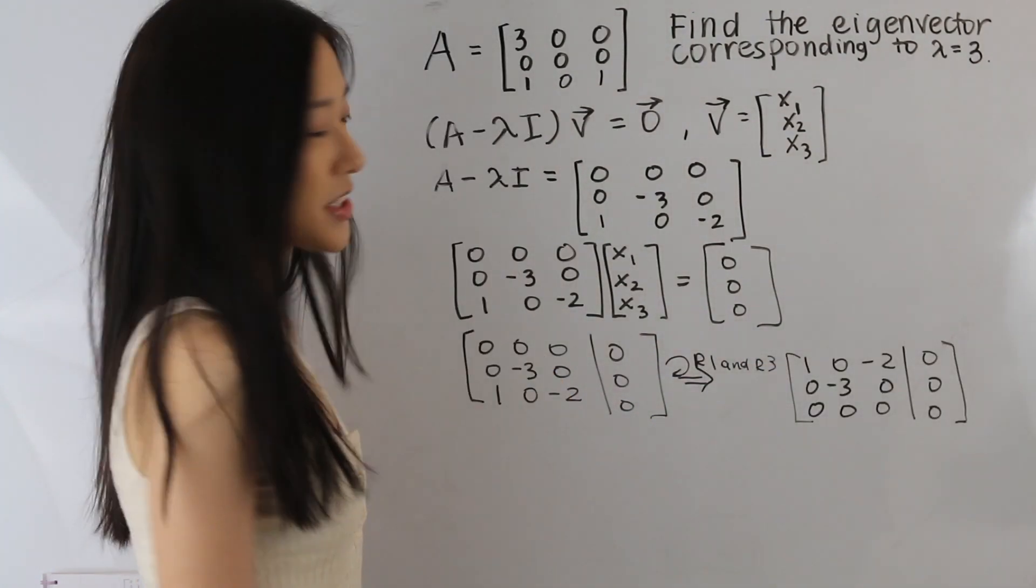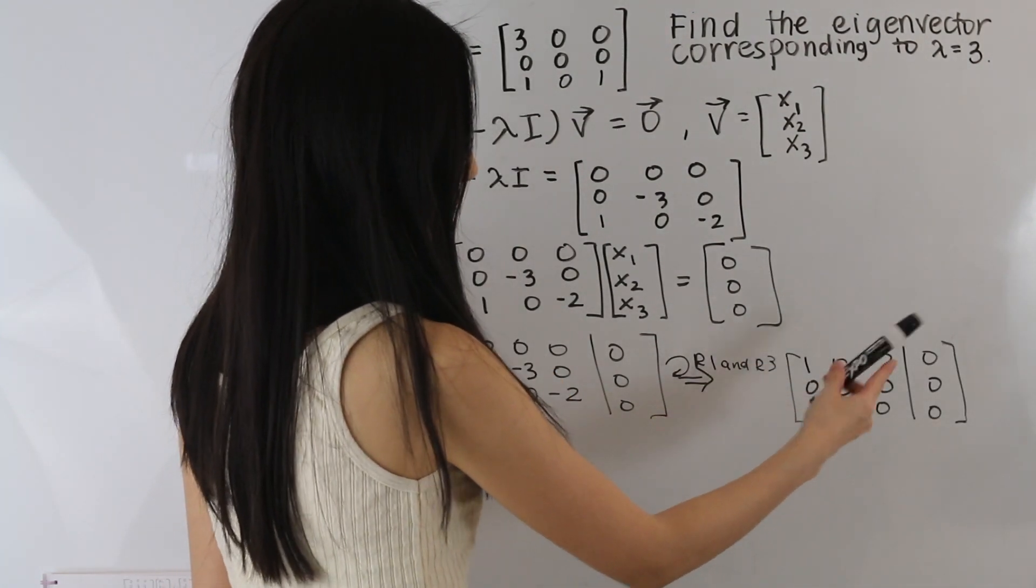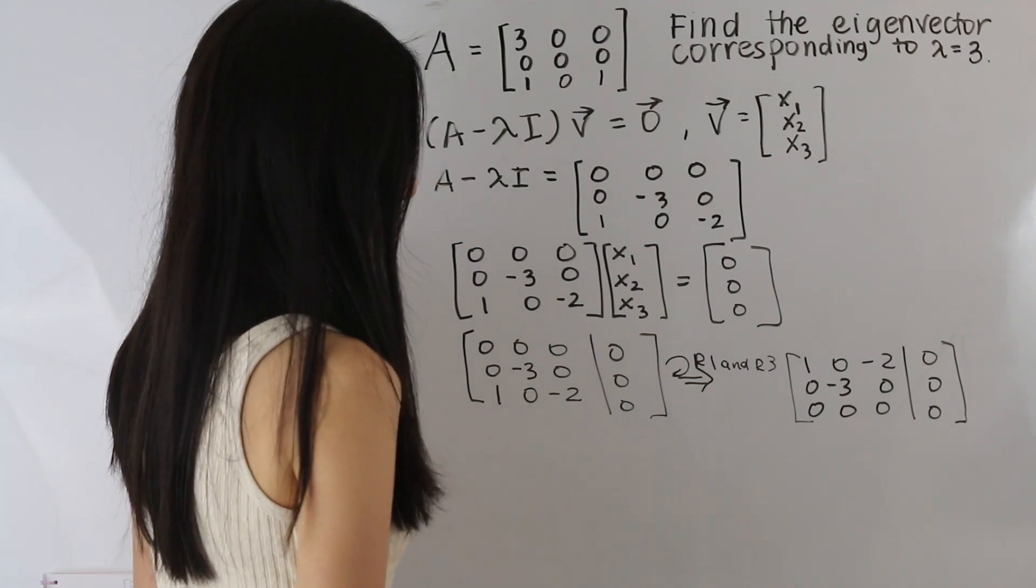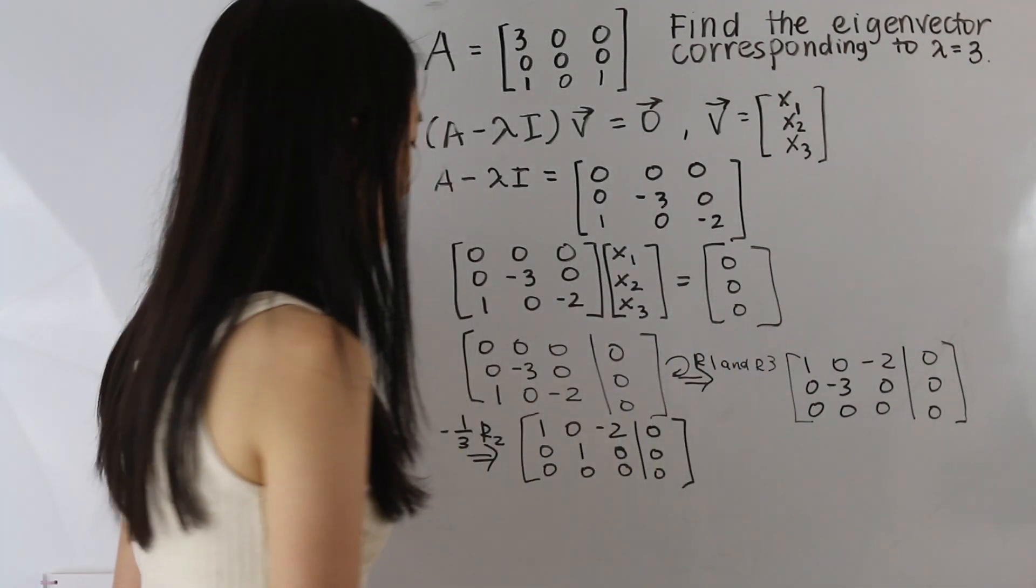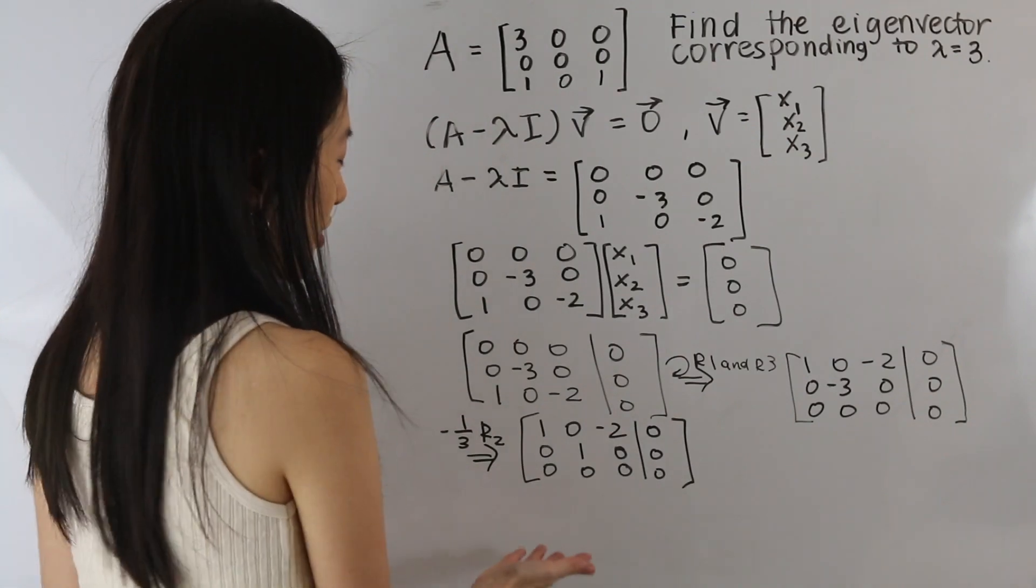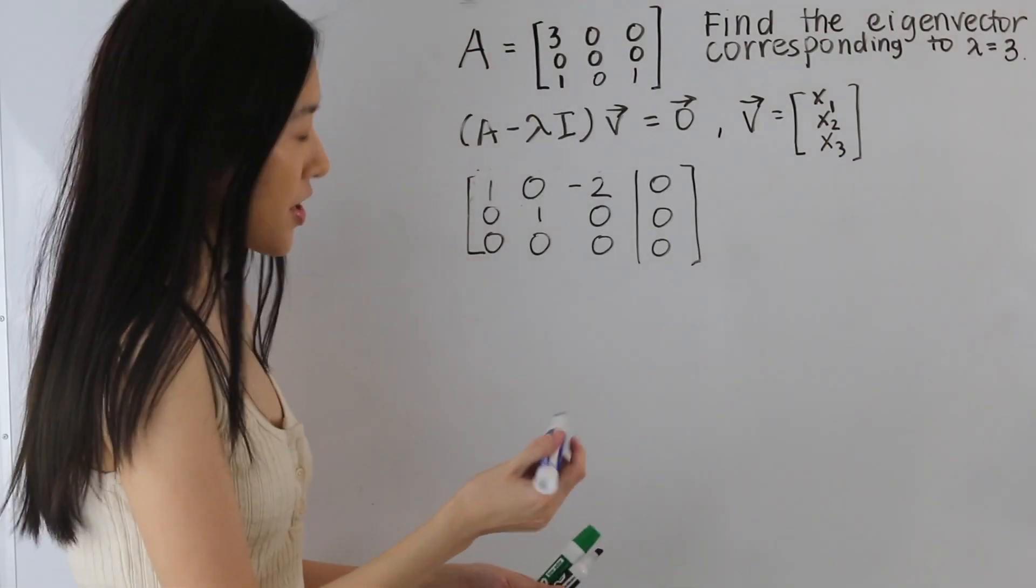So the next thing that we're going to want to do is turn this negative 3 into a 1. So we're going to multiply row 2 by negative 1 third. And so now we have our matrix in row echelon form.